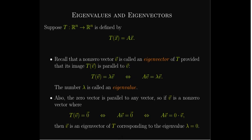Remember that the zero vector is parallel to any vector, so if the image of a non-zero vector V is the zero vector, then that non-zero vector V is an eigenvector, and it corresponds to the eigenvalue zero.